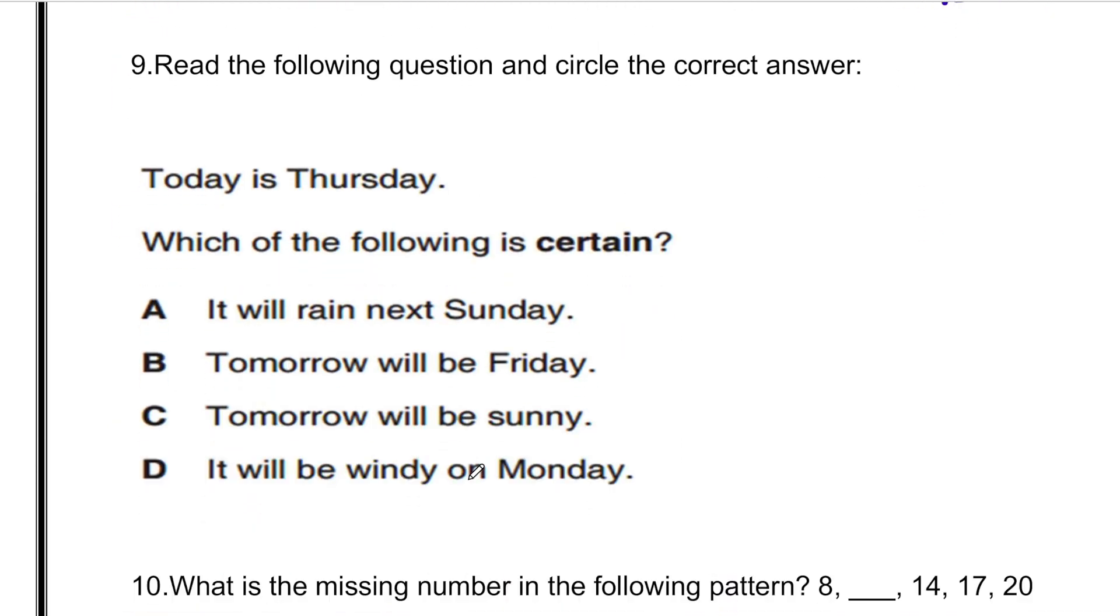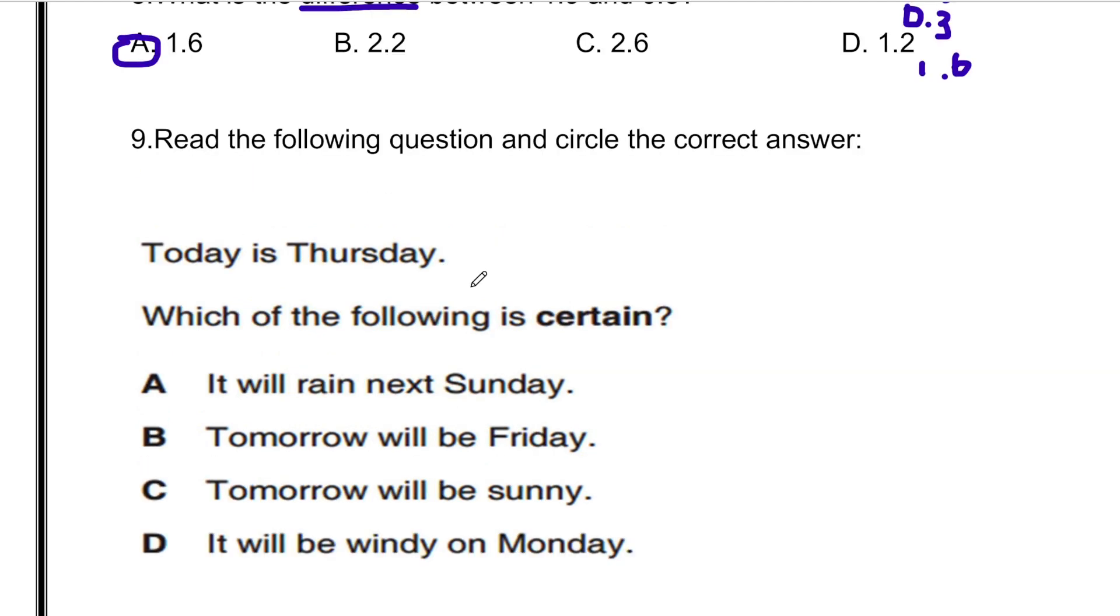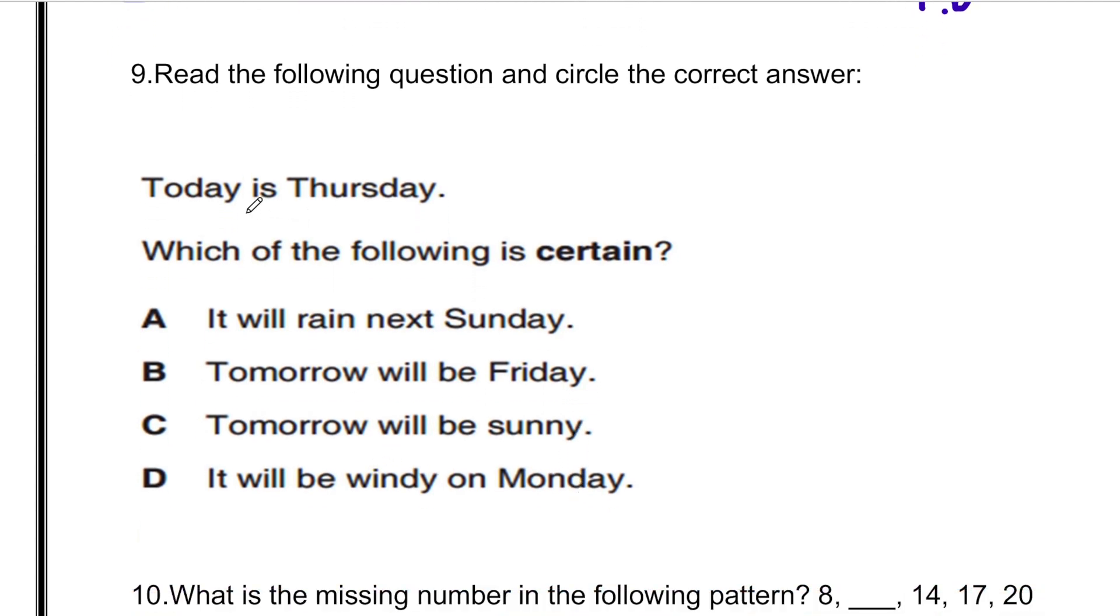Read the following question and circle the correct answer. Today is Thursday. Which of the following is certain? It will rain next Sunday. Tomorrow will be Friday. Tomorrow will be sunny. It will be windy on Monday. We did not check the weather report either, but tomorrow will be Friday is a fact. If today is Thursday, then tomorrow will be Friday. So that is the correct answer.